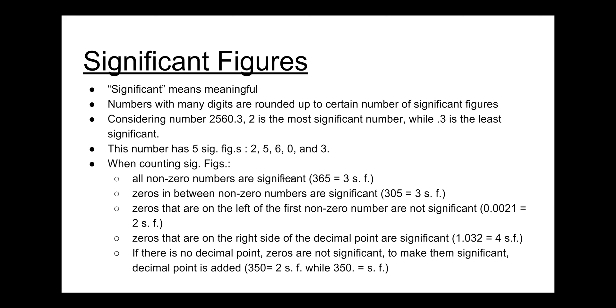If there is no decimal point, zeros are not significant. In order to make them significant, decimal point has to be added. For example, in the number 350, there are only two significant figures. In order to make the zero significant, you need to put the decimal after zero.